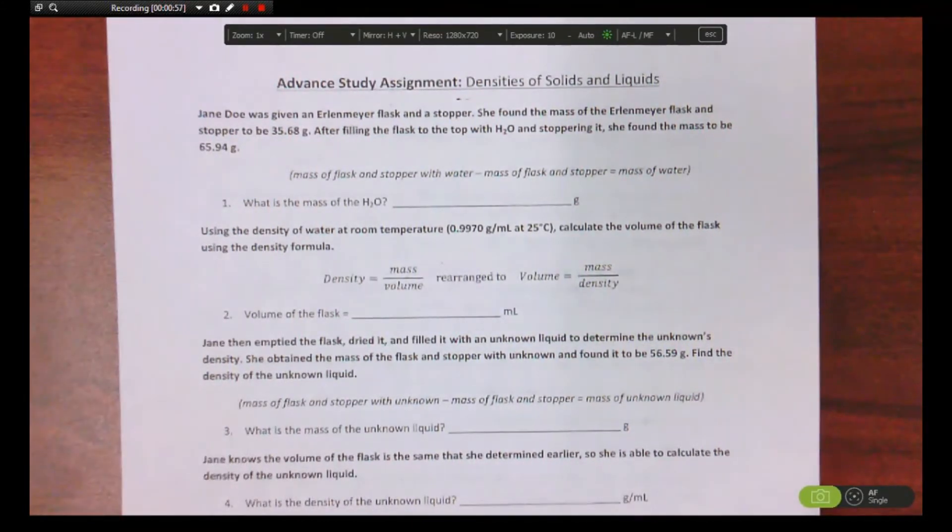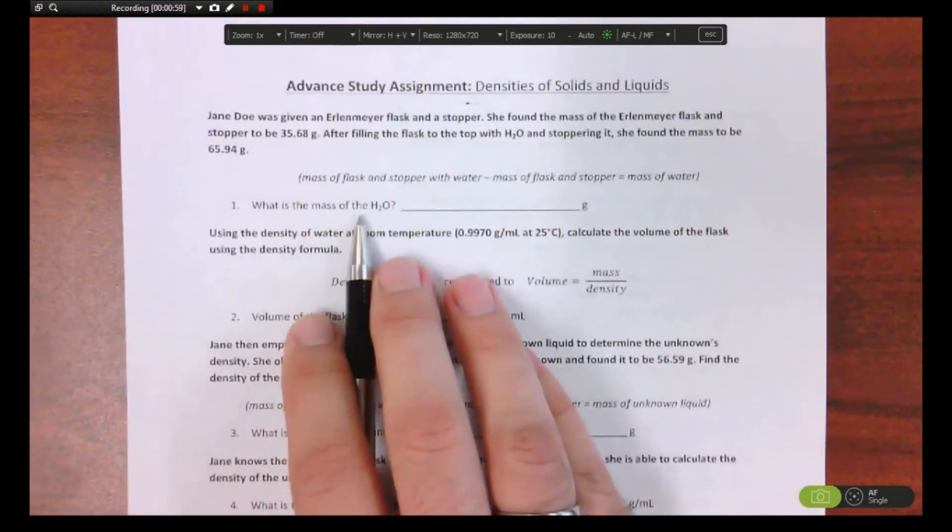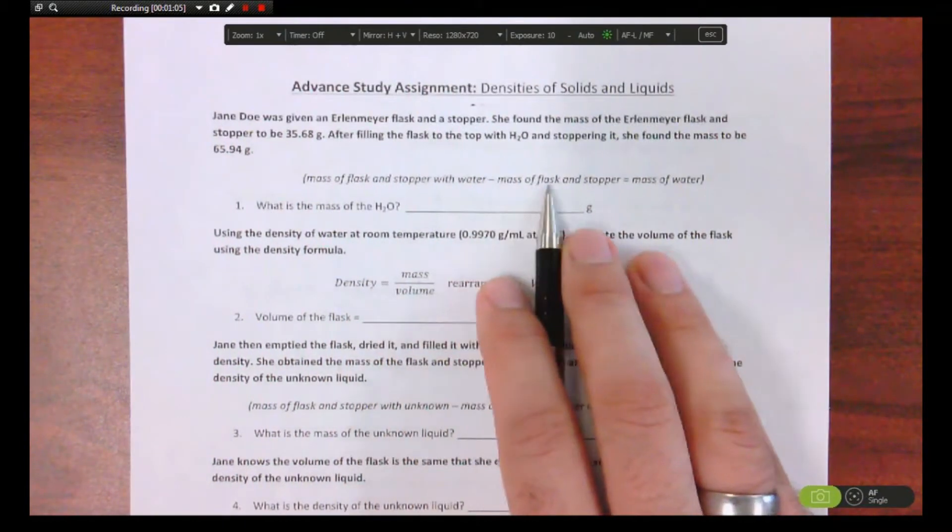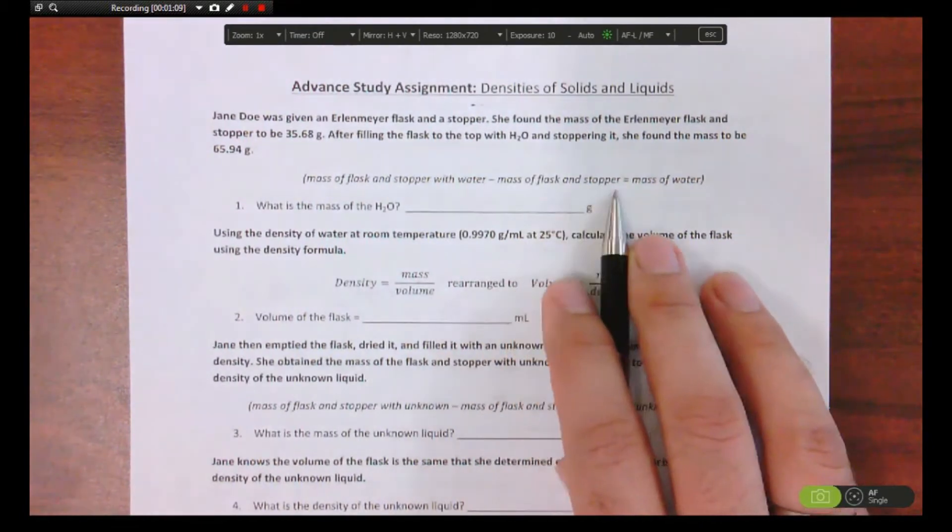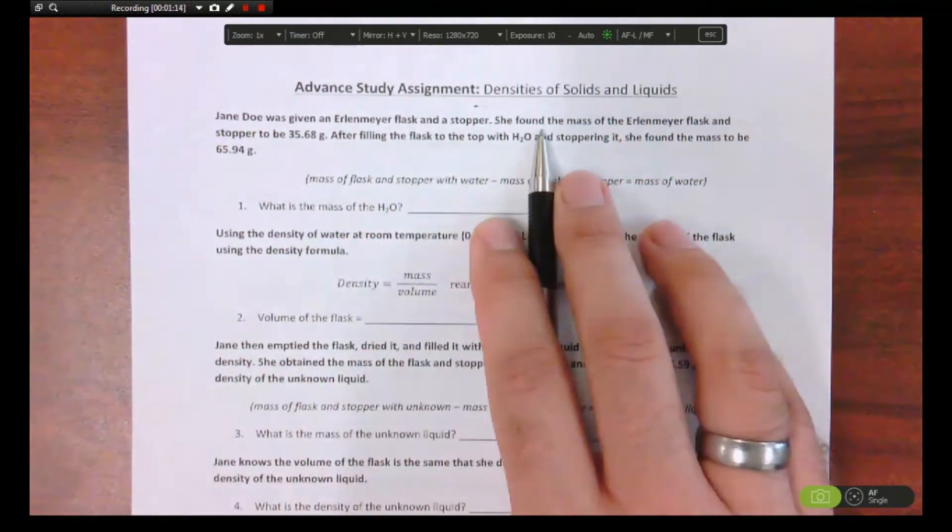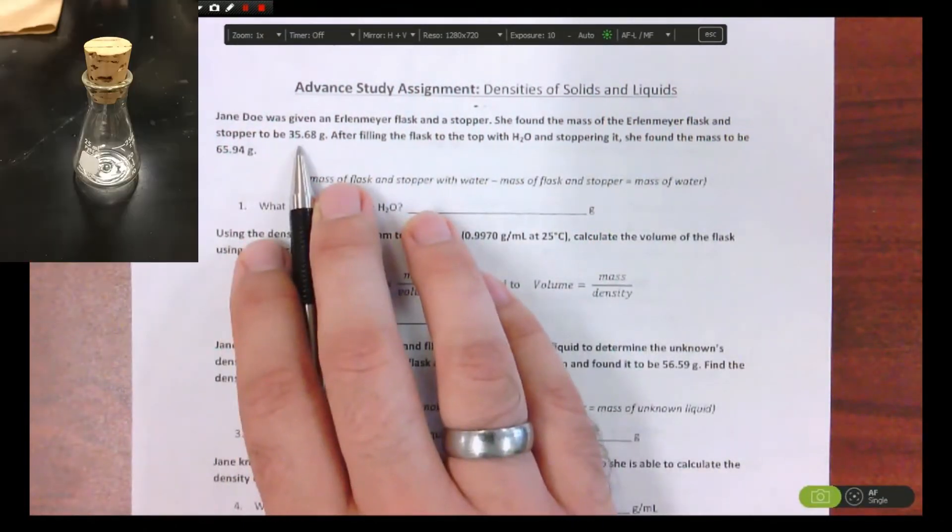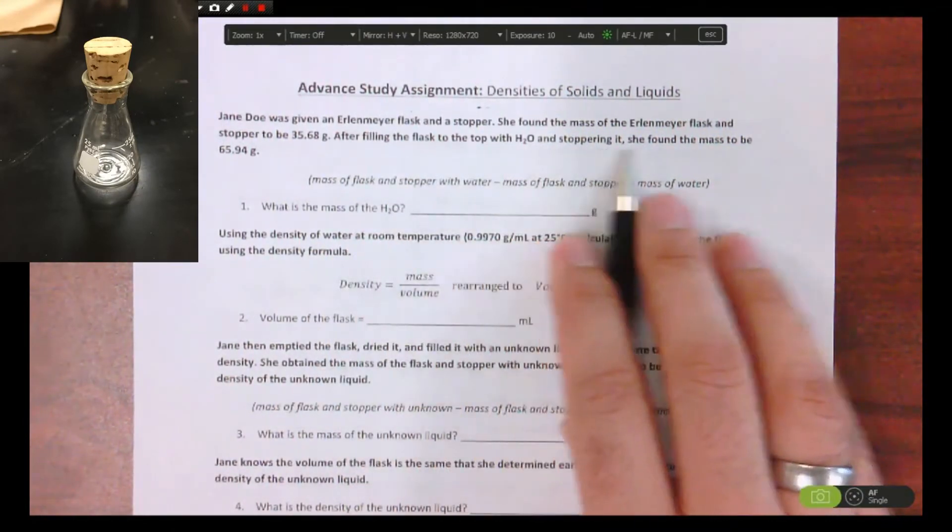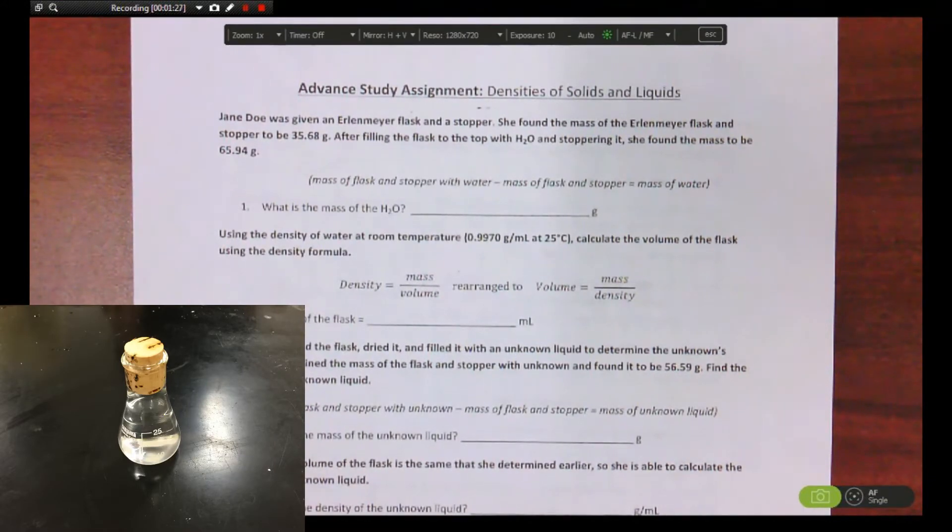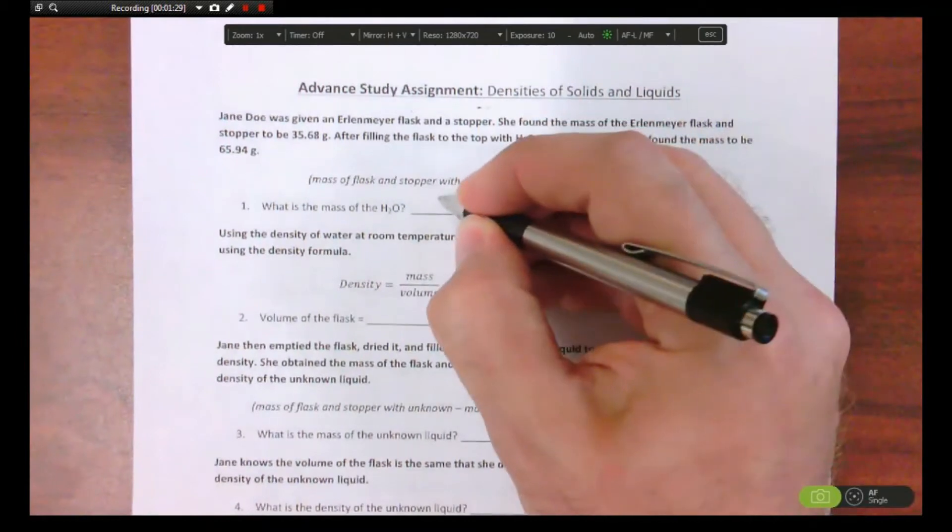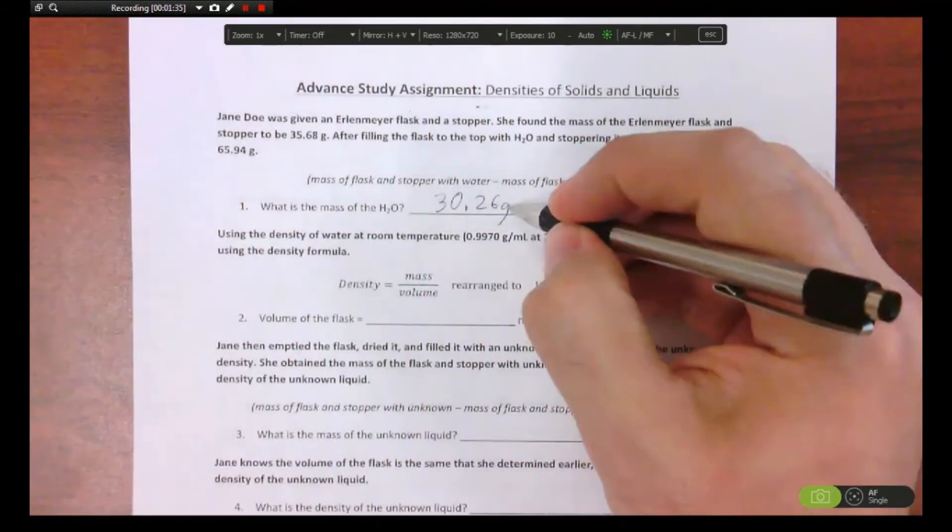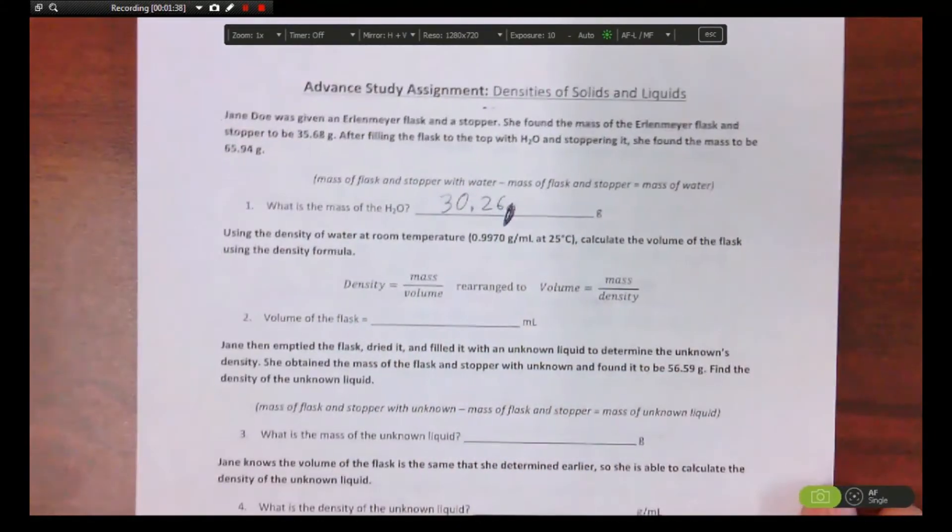It says right here, what is the mass of H2O? They even give you a hint right here: the mass of the flask and stopper with water minus the mass of the flask and stopper. So you read up here Jane Doe had an Erlenmeyer flask with a stopper, she found the mass of the Erlenmeyer flask and stopper to be 35.68. After filling the flask to the top with H2O and stoppering it, she found the mass to be 65.94. How do we get the mass of the water inside the flask? Subtract, and what'd you get? 30.26. Okay, and I wrote grams twice there, sorry, it's a habit.